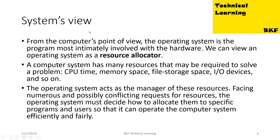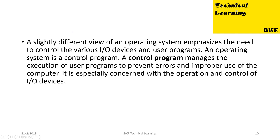Systems view. From the computer's point of view, the operating system is the program most intimately involved with the hardware. We can view an operating system as a resource allocator. A computer system has many resources that may be required to solve a problem — CPU time, memory space, file storage space, IO devices, and so on. The OS acts as a manager of these resources. Facing numerous and possibly conflicting requests, the OS must decide how to allocate them to specific programs and users so that it can operate efficiently and fairly. A slightly different view emphasizes the OS as a control program — it manages the execution of user programs to prevent errors and improper use of the computer, and is especially concerned with the operation and control of IO devices.